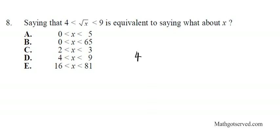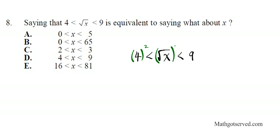We have 4 less than the square root of x, less than 9. To get rid of the square root, we do the opposite operation, which is squaring. So we square all three sides: 4 squared is 16, squaring the square root of x cancels out leaving x, and 9 squared is 81. So the answer is 16 < x < 81, which is option B.